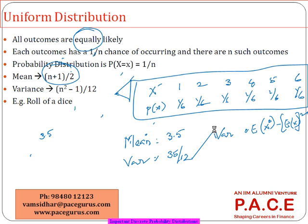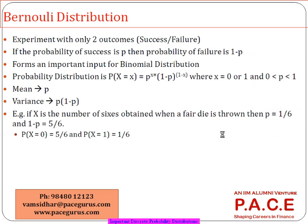Now, the next one is called as a Bernoulli distribution. See, in the uniform distribution, we talked about n number of outcomes, and all of them have equal chance. Now, the Bernoulli distribution says, there are only...